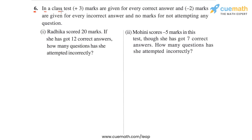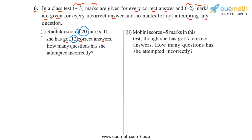Question 6 says: in a class test, plus 3 marks are given for every correct answer and minus 2 marks are given for every incorrect answer, and no marks for not attempting any question. In Part 1, the problem says Radhika scored 20 marks. If she got 12 correct answers, how many questions has she attempted incorrectly? We are given 12 correct answers and a total score of 20 marks, but we don't know the number of incorrect answers — that's what we have to find.